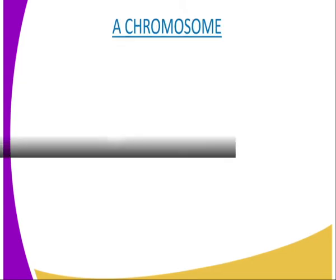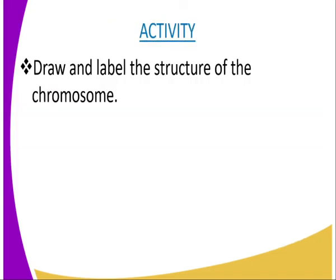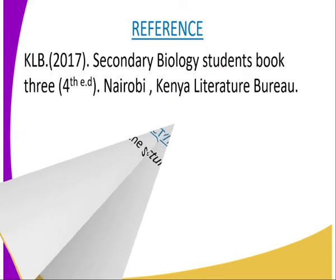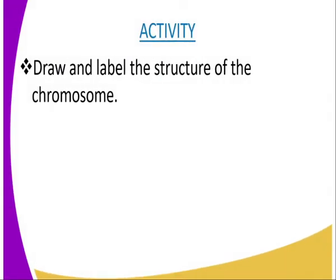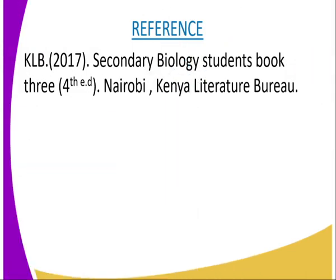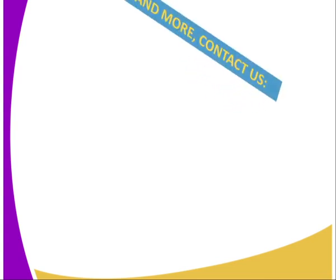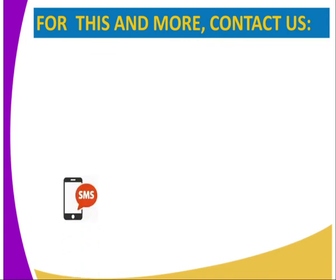There are two types of cell division which include mitosis and meiosis, and those we are going to look at in our next lesson. We will have an activity whereby you will be required to draw and label the structure of the chromosome. For further reading you can refer to KLB Secondary Biology Student's Book Three, Fourth Edition, certified by the Kenya Literature Bureau.